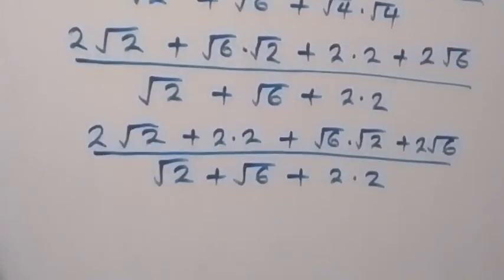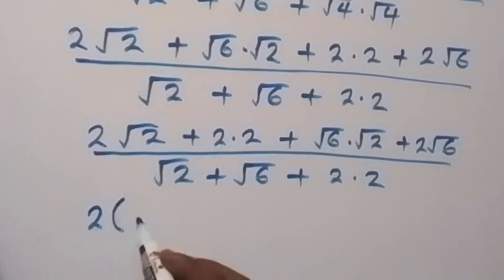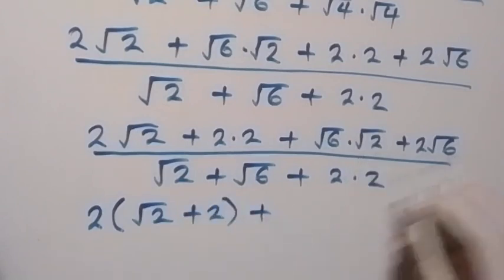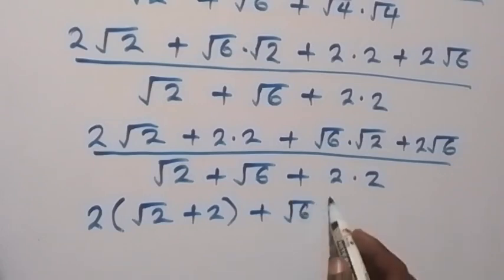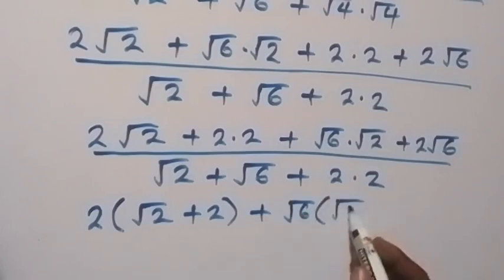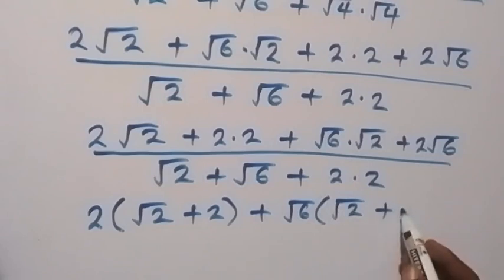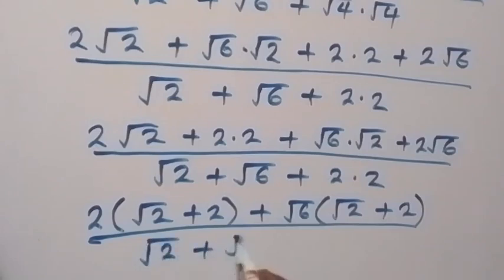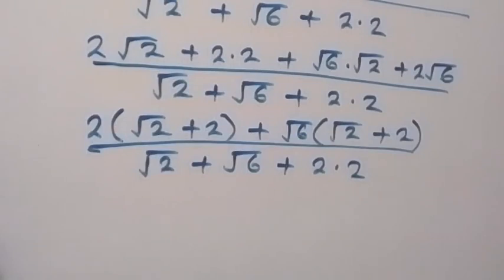The next step: let's factor 2 out, so the numerator becomes 2 into bracket(root 2 plus 2), then plus root 6 into bracket(root 2 plus 2) also. Then divided by here we have root 2 plus root 6 then plus 2 times 2.